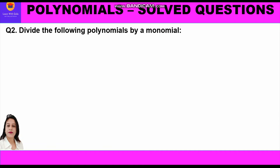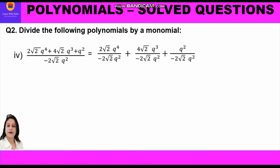The fourth part is (2√2·q⁴ + 4√2·q³ + q²) divided by -2√2·q². The numerator has three terms, so we split each: (2√2·q⁴)/(-2√2·q²) + (4√2·q³)/(-2√2·q²) + q²/(-2√2·q²).